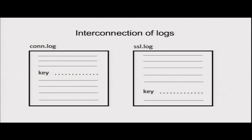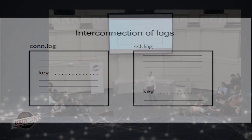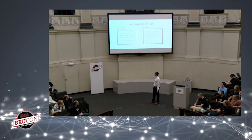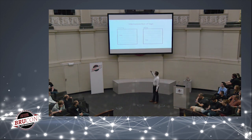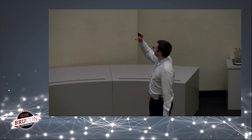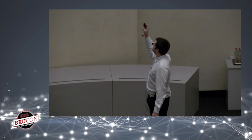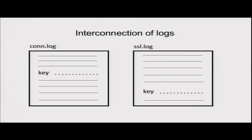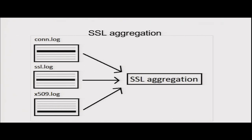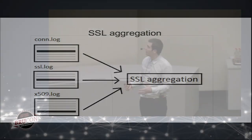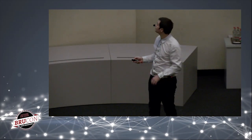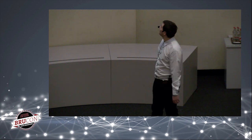A big advantage of the Bro log files is the interconnection between them using keys. If you need to find a TLS connection, you select a connection log entry with a key, then find the matching key in the SSL log to confirm it's TLS. From these three files — conn log, SSL log, and X.509 log — we generate the SSL aggregation, which combines information from all three.